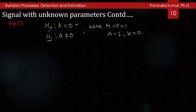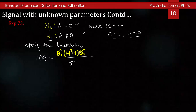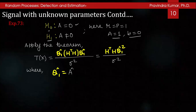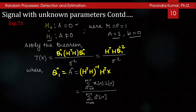Applying the GLRT theorem, with p = r = 1, A = 1, and b = 0, the test statistic T(x) = θ̂₁ · H^T H · θ̂₁ / σ², which can also be written as (H^T H · θ̂₁)² / σ², where θ̂₁ = (H^T H)^{-1} H^T x is the estimated value of A. The estimated value of A equals [Σ_{n=0}^{N-1} x[n]·s[n]] / [Σ_{n=0}^{N-1} s²[n]].